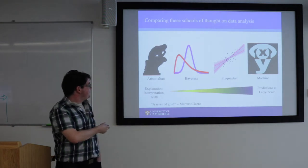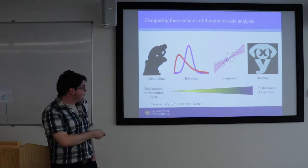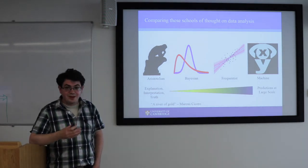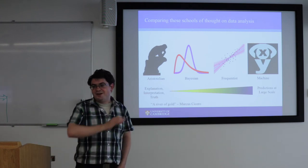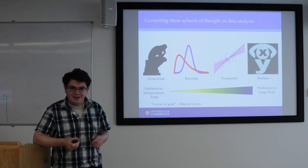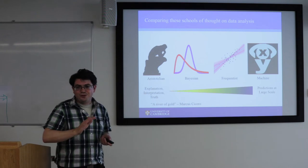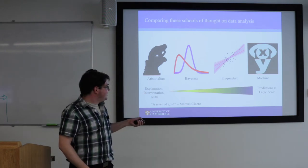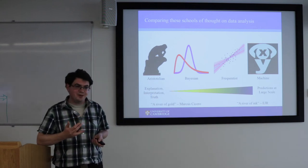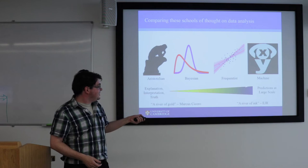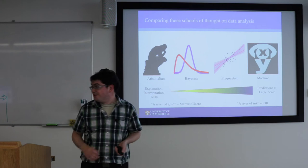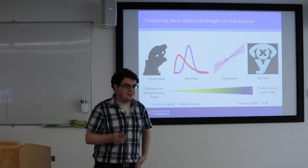As a comment on Aristotelian natural science, the Roman philosopher Marcus Cicero commented that if Plato's work is a river of silver, then Aristotle's writing is a river of gold. I can add: if machine learning is more like a river of ink — taking very large amounts of numerical data and attempting to learn from it — it's not attempting to figure out the one true underlying principle.